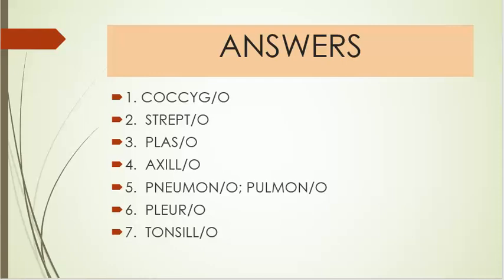Answers. Number one is coccygeo. Number two is strepto. Number three is plazo. Number four: axillo. Number five: pneumono and pulmono. Number six: pleuro. And number seven: tonsillo.